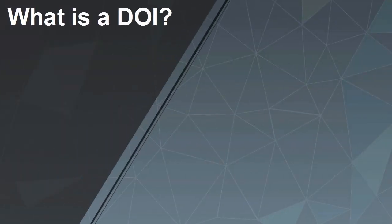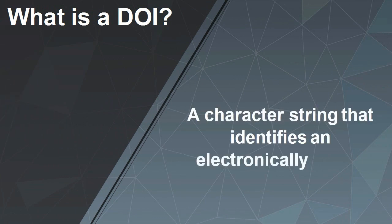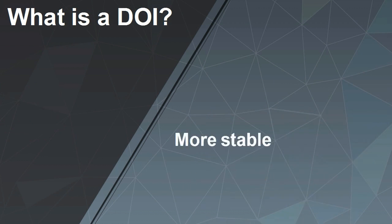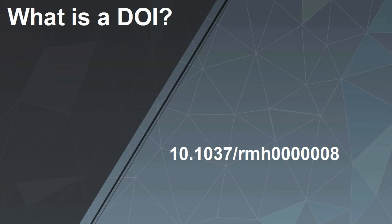What is a DOI? A DOI, or Digital Object Identifier, is a character string that identifies an electronically stored source. It is more stable than a URL and is therefore a preferred way of making reference to the source in academic writing. Here is an example of a DOI.